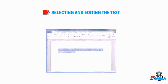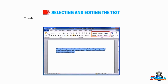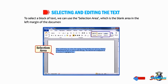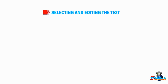The selected text is displayed on the screen in a highlighted bar. To select a block of text, we can use the selection area, which is the blank area in the left margin of the document. We can select the text in a variety of ways. Now let us understand how to select the text using the mouse.